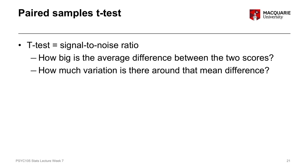So into the paired samples t-test. As I said before, this is really similar to the other two t-tests that we've talked about, in that the paired samples t-test is also a signal to noise ratio. It's a ratio of how big the average difference is between the two scores on the numerator, in proportion to how much variation there is around that mean difference as the denominator. So the signal is the difference between the two scores, and the noise is the variability around that mean difference.